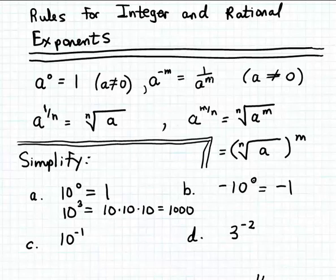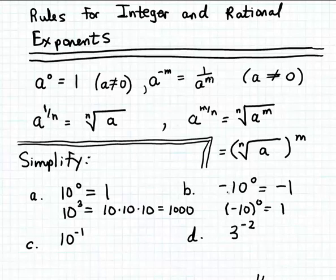If you want the zero exponent to apply to the minus sign as well — that is, to raise negative 10 to the zeroth power — you must enclose that minus sign in parentheses. It is true that negative 10 in parentheses raised to the zeroth power simplifies to one, but without parentheses the expression simplifies differently.